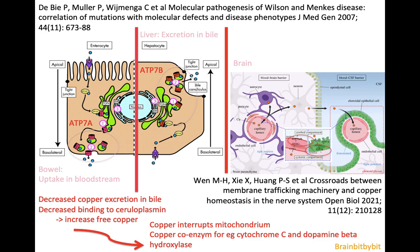Wilson's disease is a problem with copper metabolism. There's uptake of copper from the diet by the bowel into the bloodstream, and it is excreted in the bile. In the enterocyte there's a protein called ATP7A that takes care of the uptake of copper, and in the liver there's ATP7B that takes care of excretion of copper in the bile. In Wilson's disease there's a problem with ATP7B, so there's less excretion of copper in the bile.